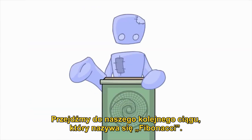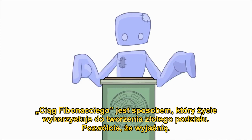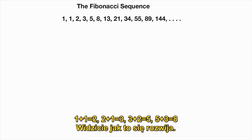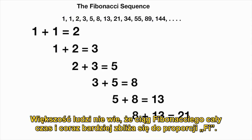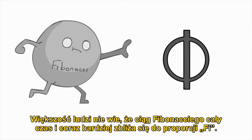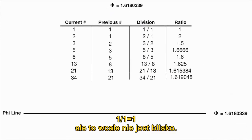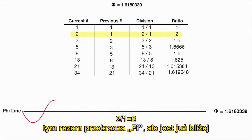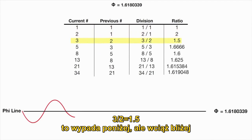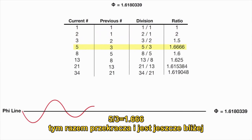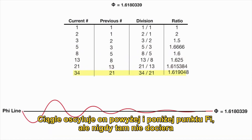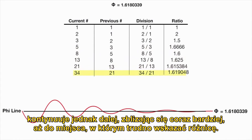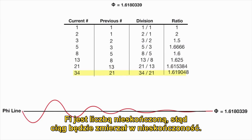The Fibonacci sequence is life's way of creating the golden mean. This sequence is continually made by adding the previous number to the current: 1 and 1 is 2, 2 and 1 is 3, 3 and 2 is 5, 5 and 3 is 8. What most people don't know is that Fibonacci continually strives closer and closer to the Phi ratio. By dividing the current number into the last, you can see this: 1, then 2, then 1.5, then 1.666, then 1.6, 1.625, 1.615384, 1.619048, and so on. It continually oscillates over and under Phi, never quite reaching it, but getting closer and closer — because Phi is infinite, this sequence will go on forever.